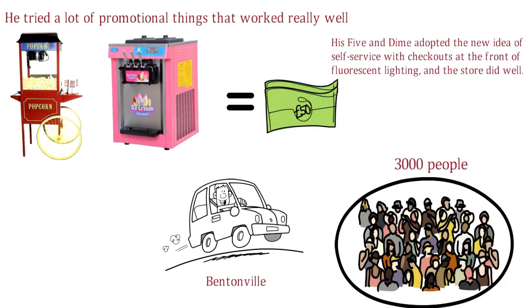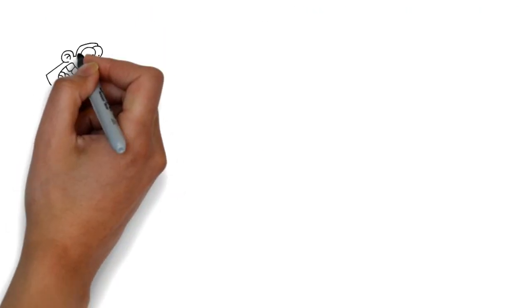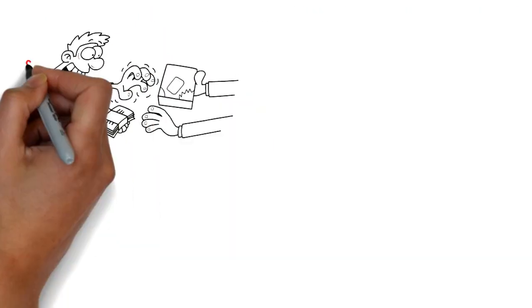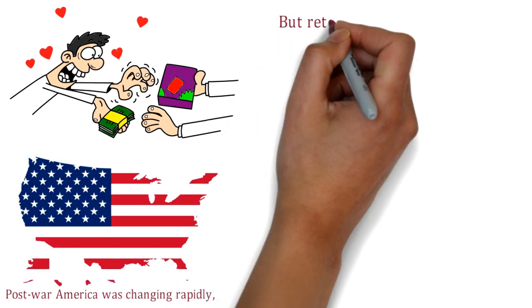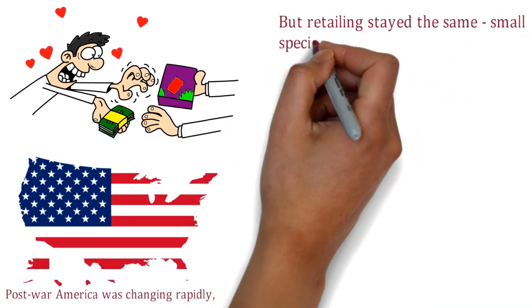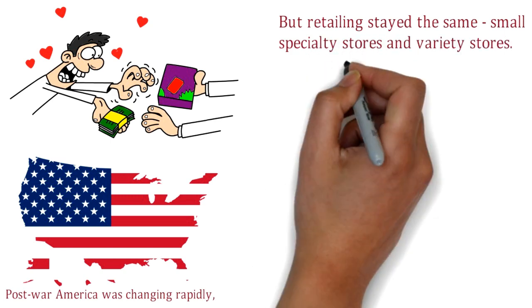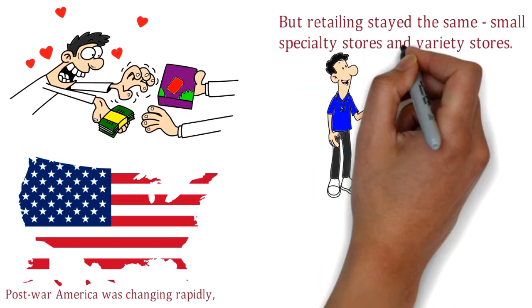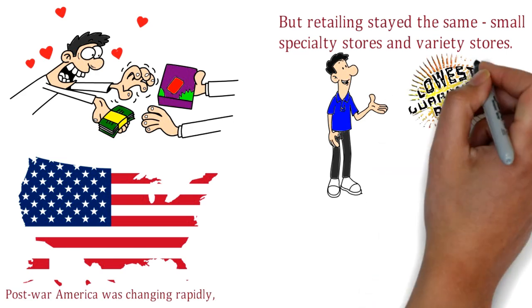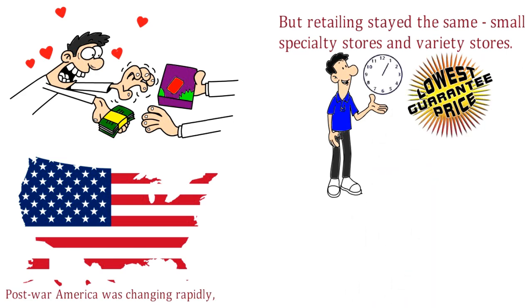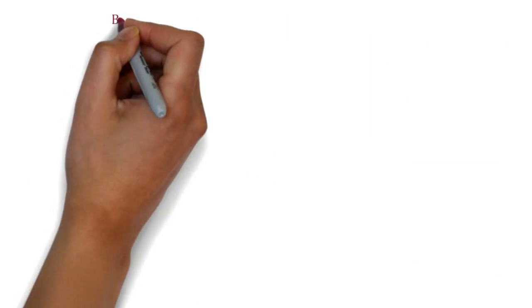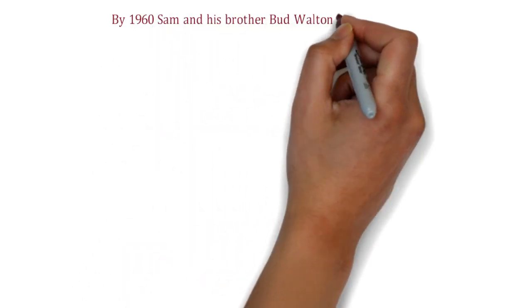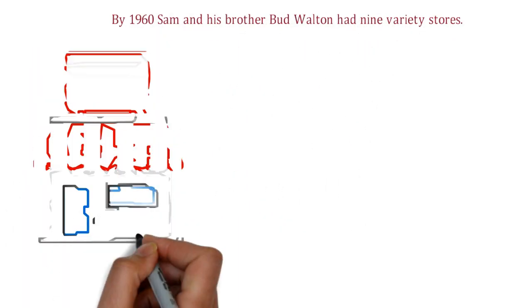Walton had discovered that there was a huge demand in small towns. Post-war America was changing rapidly, but retailing stayed the same - small specialty stores and variety stores. Sam Walton started offering much lower prices, greater variety, satisfaction guaranteed, and long opening hours. He tried to buy direct from manufacturers, cutting out the middleman. By 1960, Sam and his brother Bud Walton had nine variety stores. The first Walmart was opened in 1962 when Sam Walton was 44.